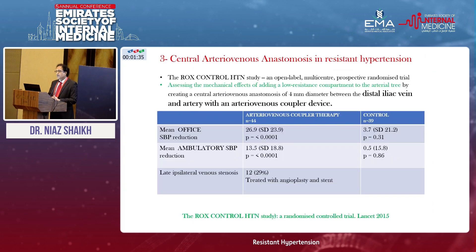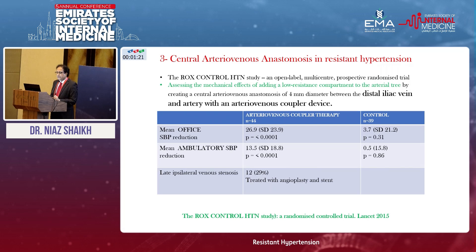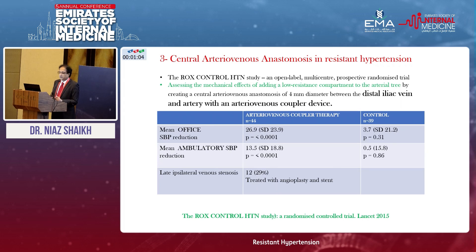A third interventional approach is central arteriovenous anastomosis — connecting the arterial system with the venous system, specifically connecting the distal iliac vein with the distal iliac artery to decrease pressure in the arterial system. Trials showed a quite significant reduction — up to 26 millimeters of mercury reduction can be achieved by this surgical method.